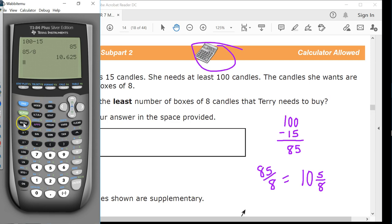In fact, you could actually hit the math button here and change that into a fraction. It gives you 85 over 8, which is what this is, and then it'll convert into this if you wanted to go even further. 10 and 5 eighths, just like I said.